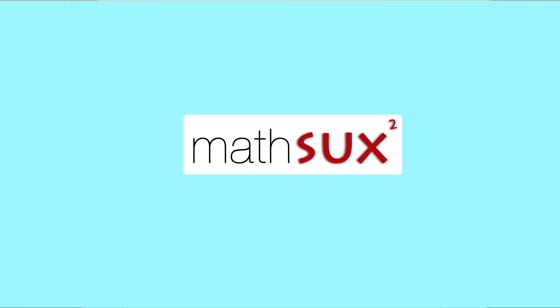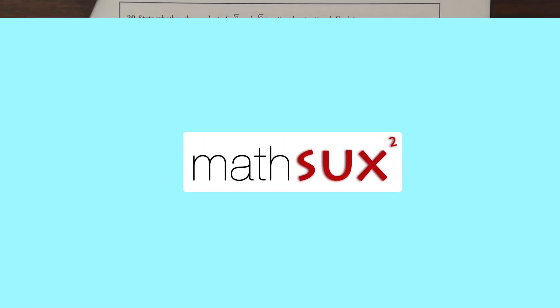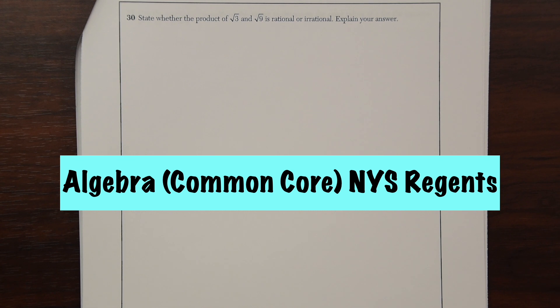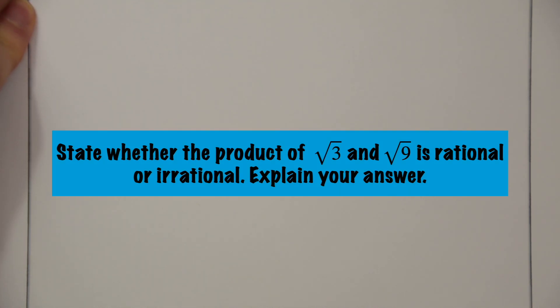Hi everyone and welcome to Math Sucks. This video is going to help you pass the algebra common core regents. So we're doing this one question at a time. Here is question 30. State whether the product of radical 3 and radical 9 is rational or irrational. Explain your answer.